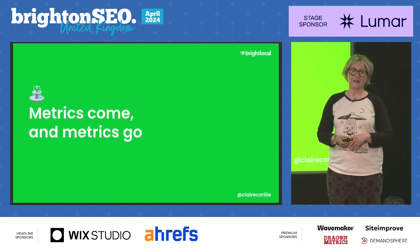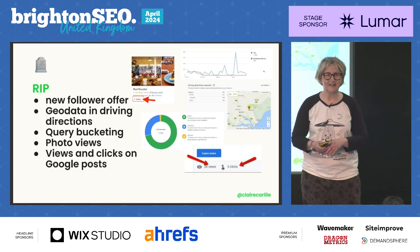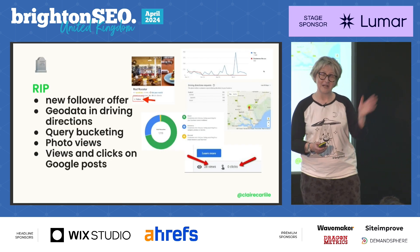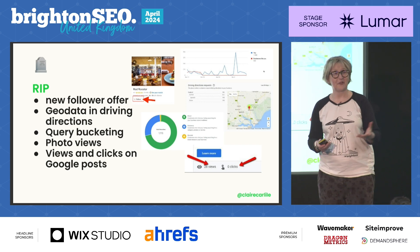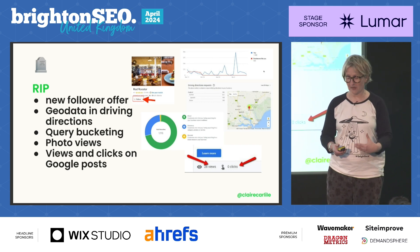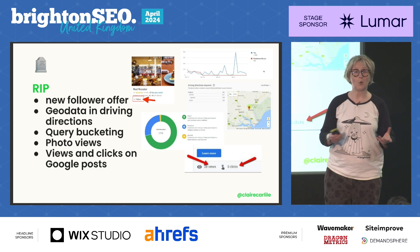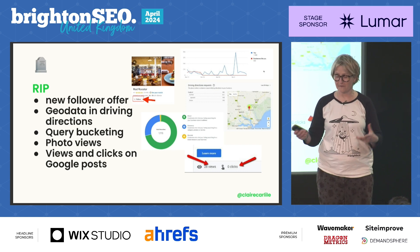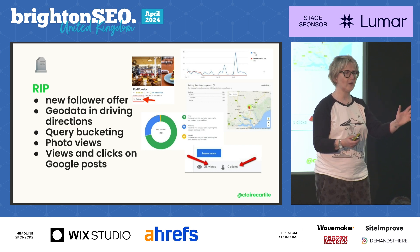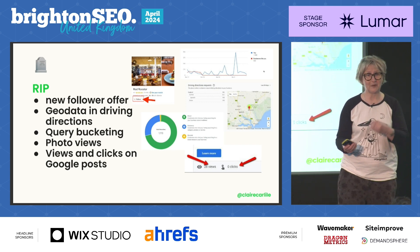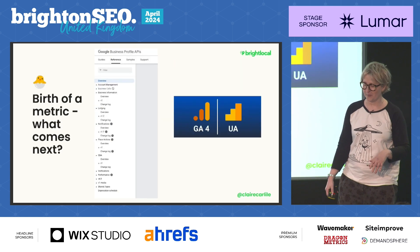Metrics come and metrics go. In the last year we've waved goodbye to quite a few. The new follower offer that everyone hated, geo data in driving directions, query bucketing, photo views, moves and clicks on Google posts — those used to come out of the API but no more. So we need to think about the real metrics we're going to report on, and who knows what comes next.